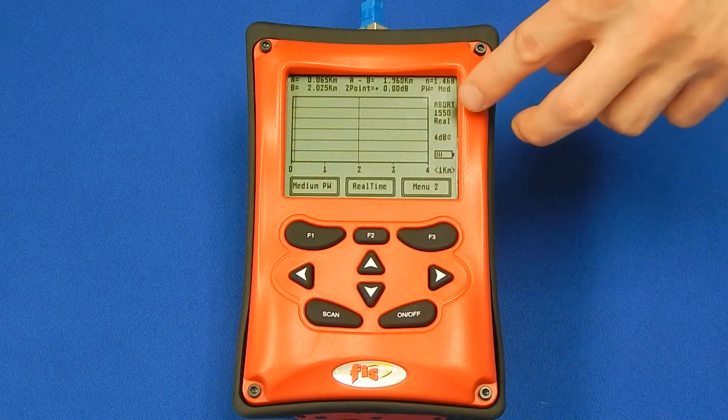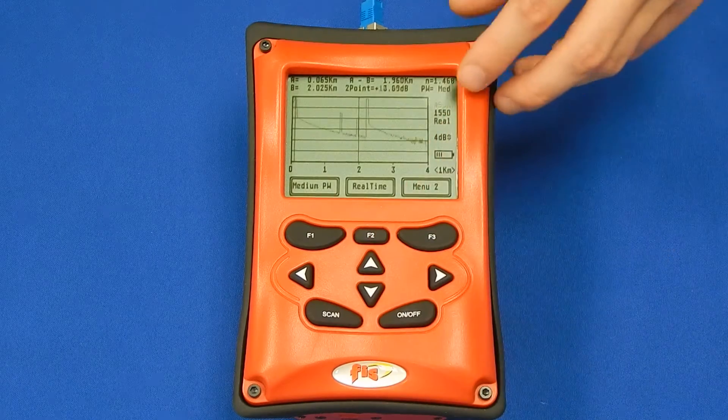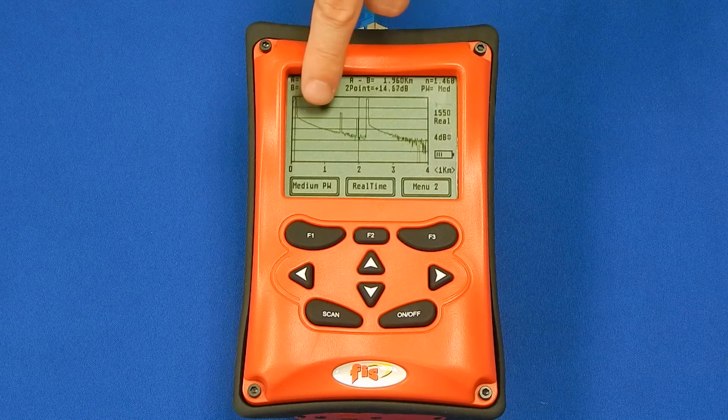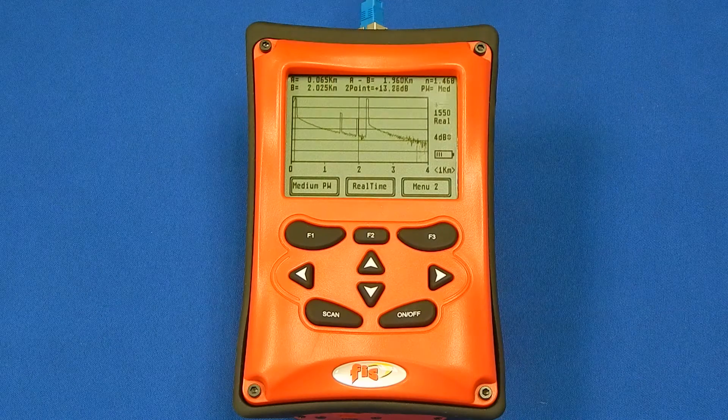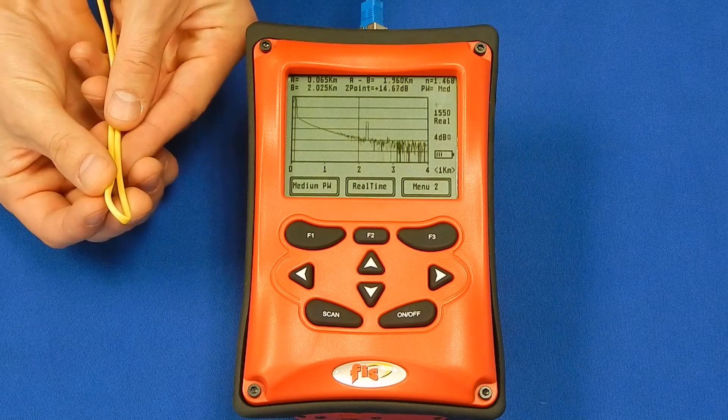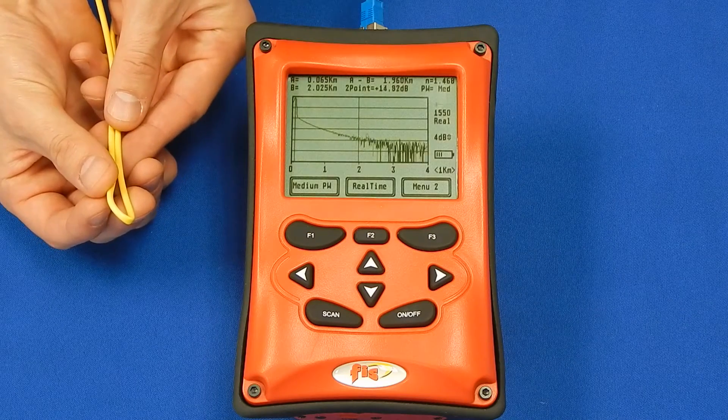Realtime mode can be helpful when locating fibers on different ends of a link. Realtime mode sends a continuous pulse down the fiber. Attenuating the fiber by putting a slight bend in it will allow for fast identification of fibers on far ends of unknown links.